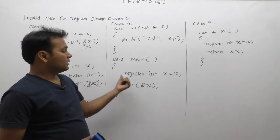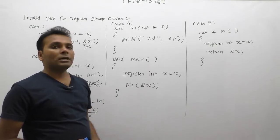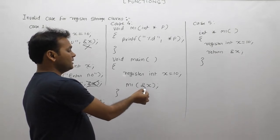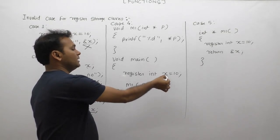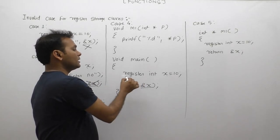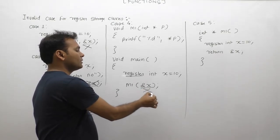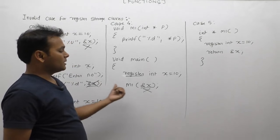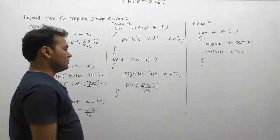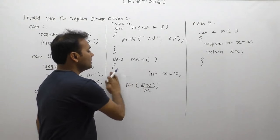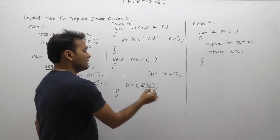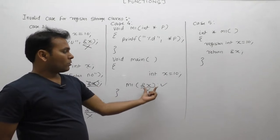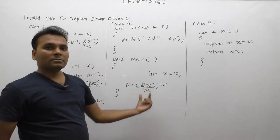Case 4: we cannot make a function call using a register variable as call by reference. We cannot call a function as call by reference with respect to register variables.